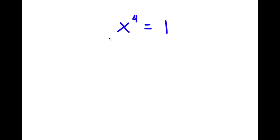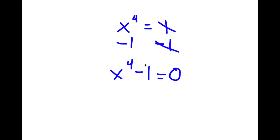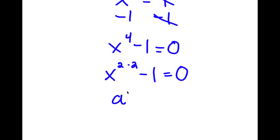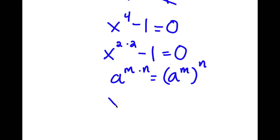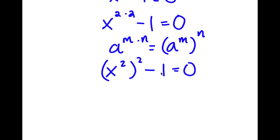In this problem, I have x to the power of 4 is equal to 1. I'm going to subtract 1 on both sides, so I get x to the power of 4 minus 1 is equal to 0. Now x to the power of 4 can be rewritten as x to the power of 2 times 2, which equals x squared to the power of 2. And 1 is the same as 1 squared, so I have x squared to the power of 2 minus 1 squared is equal to 0.